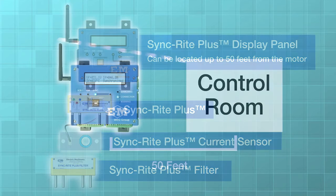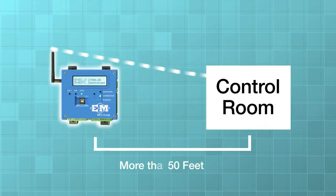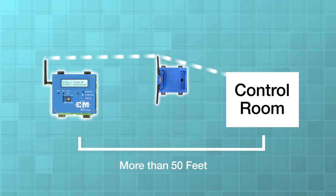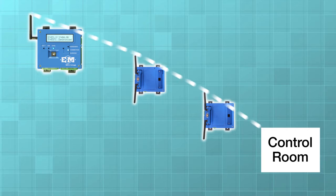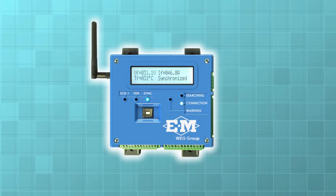If you want to locate the display panel farther than 50 feet, say in your control room, install a wireless repeater or multiple repeaters to extend your distance to the display panel.